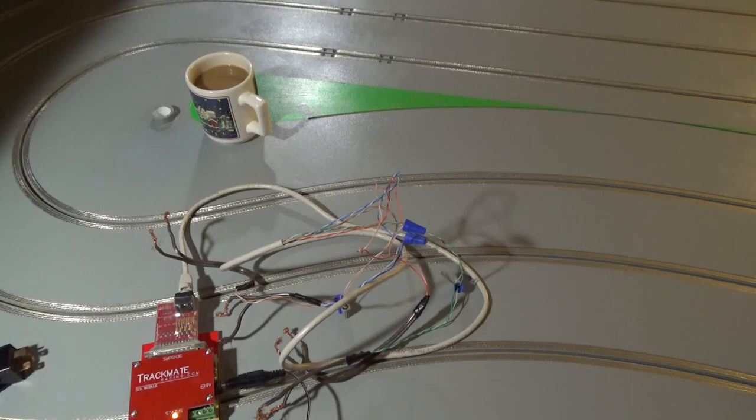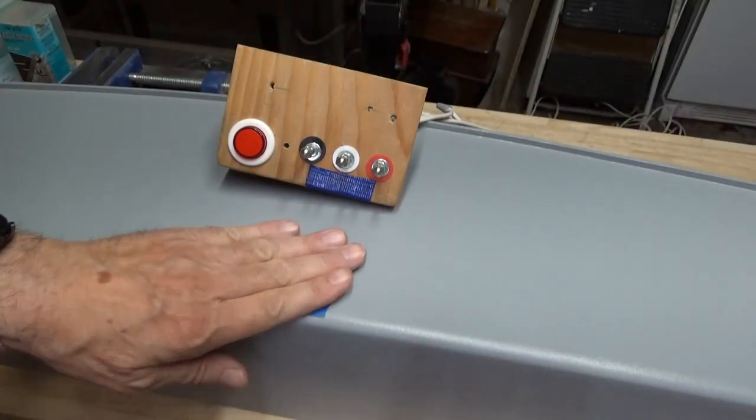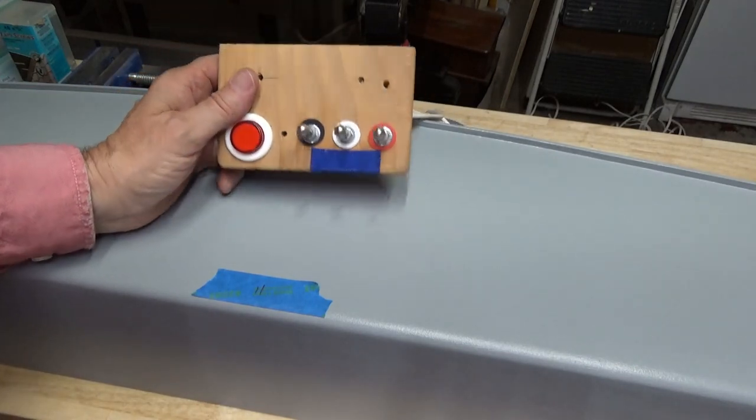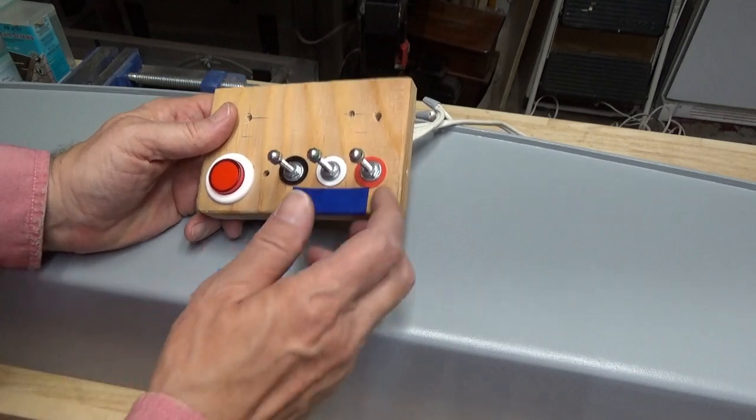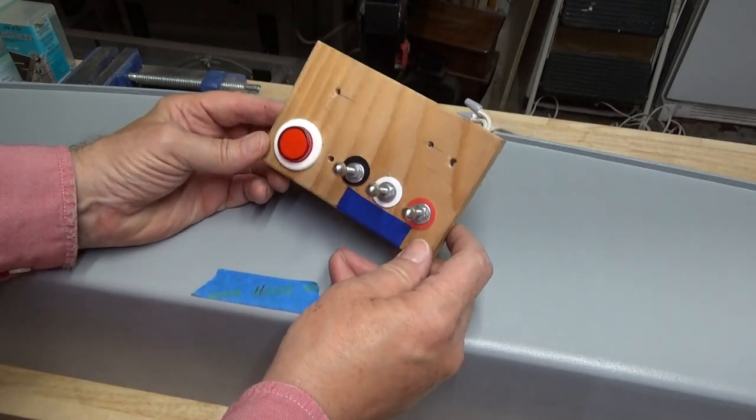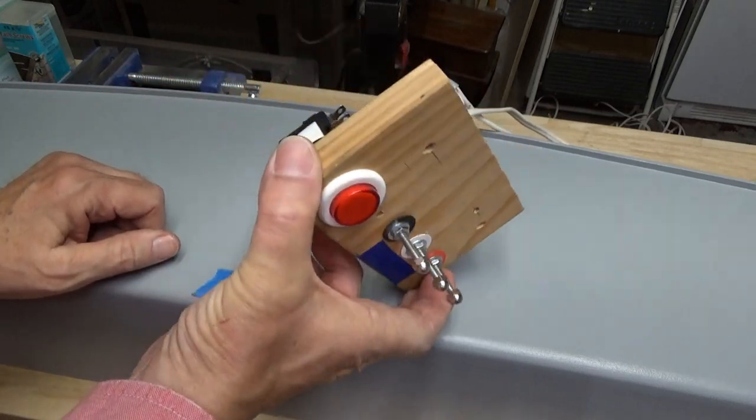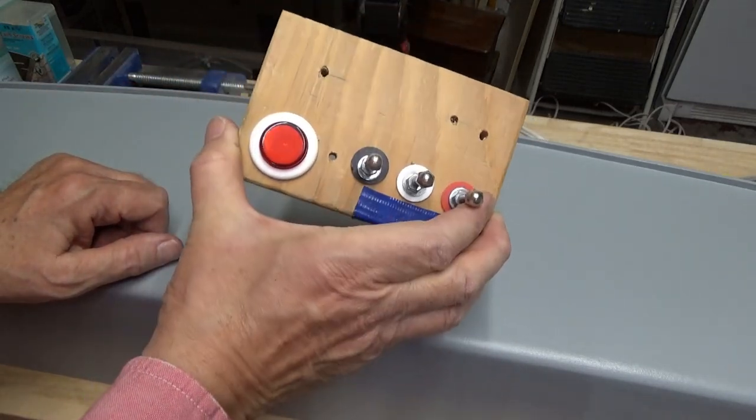I won't show you all the excruciating details but now you can see what we're trying to do. We have to fit this driver station with the connections for each of the controllers. If we have time I may talk about the controllers either this time or next time for those that are interested. But essentially this was from a previous track that I had, it wasn't a wood track it was a Carrera plastic track.